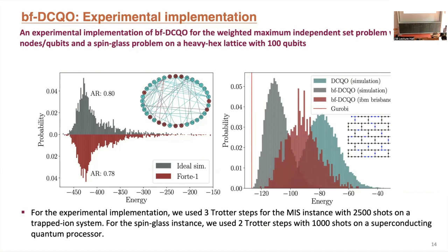We also plotted the solution from Gurobi, a classical approximate optimization algorithm. The best result from Gurobi and the result from bias field DCQO in the ideal case — using just two Trotter steps — match each other. Experimentally we are not quite there yet, as we haven't applied error mitigation techniques. These experiments used two Trotter steps and just 1,000 shots for the 100-qubit experiment.